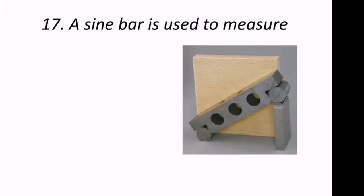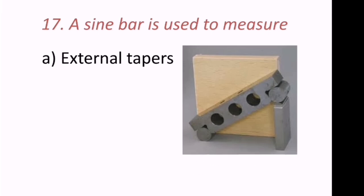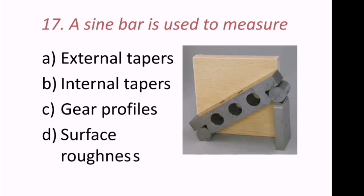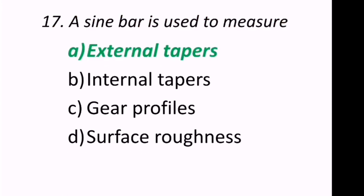Seventeenth question: A sine bar, as seen in the figure, is used to measure what? The options are external tapers, internal tapers, gear profiles, or surface roughness. The correct answer is external tapers — a sine bar is used to measure external tapers.